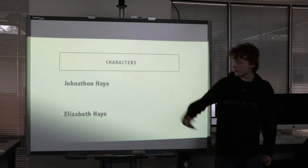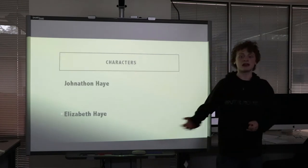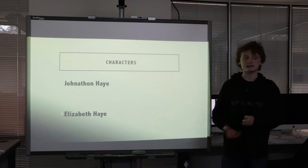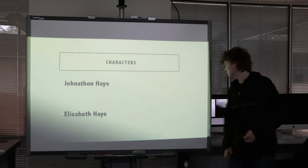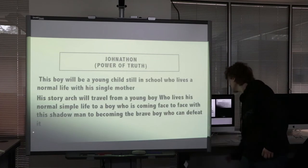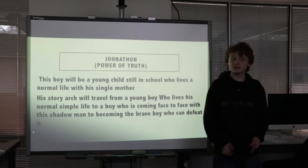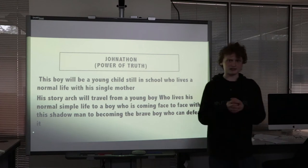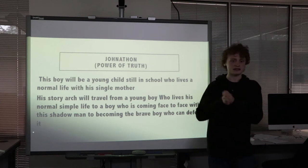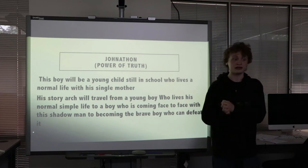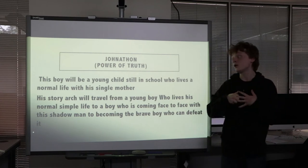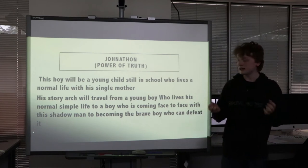There are two characters: Jonathan Hay and Elizabeth Hay. Jonathan Hay is the main character; Elizabeth Hay is the side character. Jonathan's driving motivation is the power of truth — he wants to find out what this creature is. He doesn't know what it is; all he knows is it's coming for him. He can hear it, but you can only see it in Act 3.